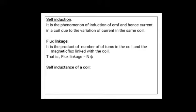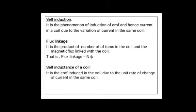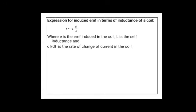Now, how to define self-inductance of a coil. Self-inductance of a coil can be defined as the EMF induced in the coil due to the unit rate of change of current in the same coil. Mathematically, this is written as E = −L(dI/dt), where E is the EMF induced in the coil, L is self-inductance, and dI/dt is the rate of change of current in the coil.